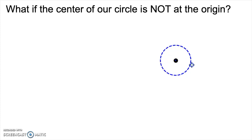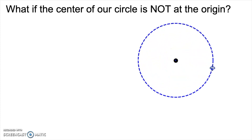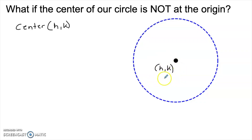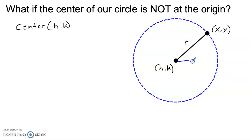So what about a circle that's not centered at the origin? We'll need variables to represent the center. Traditionally in mathematics, we use h, k for the coordinates of the center — h and k are just variables; they could be any number. Just like before, if we connect the center of the circle to any point on the circle, we get the radius.